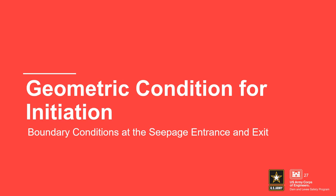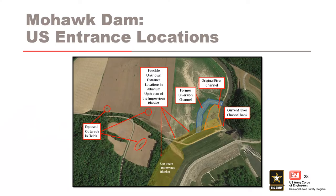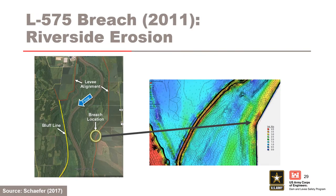Assessing the seepage path length requires an understanding of the upstream or riverside and downstream or landside boundary conditions. In this plan view of Mohawk Dam, the team identified various defects in the alluvial top stratum as potential upstream seepage entrance locations, used to evaluate various seepage paths. Vegetation in the floodway can constrict and concentrate flow along the levee alignment, leading to riverside scour of the top stratum and levee embankment, directly connecting the foundation sand to the river and shortening the seepage pathway.